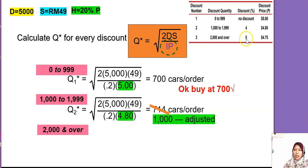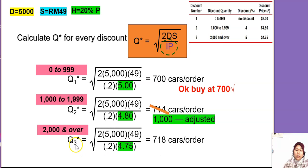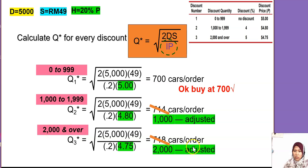Now we calculate Q for the third discount price. The range is 2,000 and over, so we change the price to 4 ringgit 75 cent and get Q ≈ 718 units. Checking the range — it's not in the range, so we adjust to the minimum value of 2,000. We now know the Q value for each price: 700, 1,000, and 2,000.